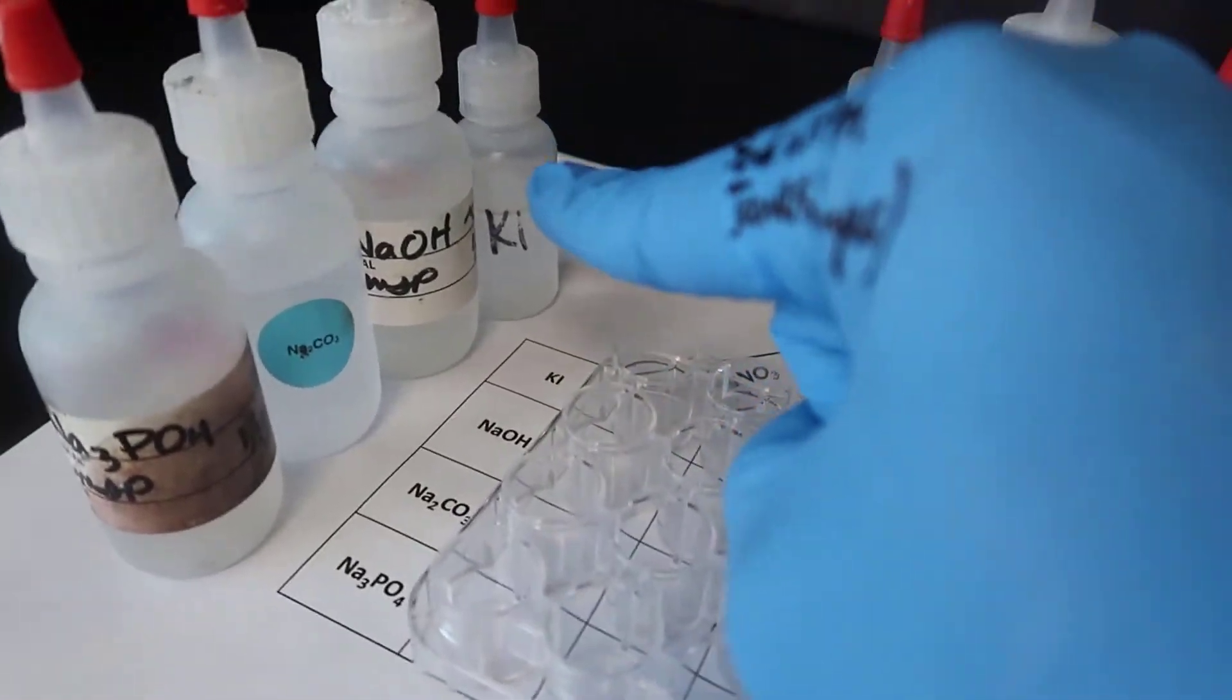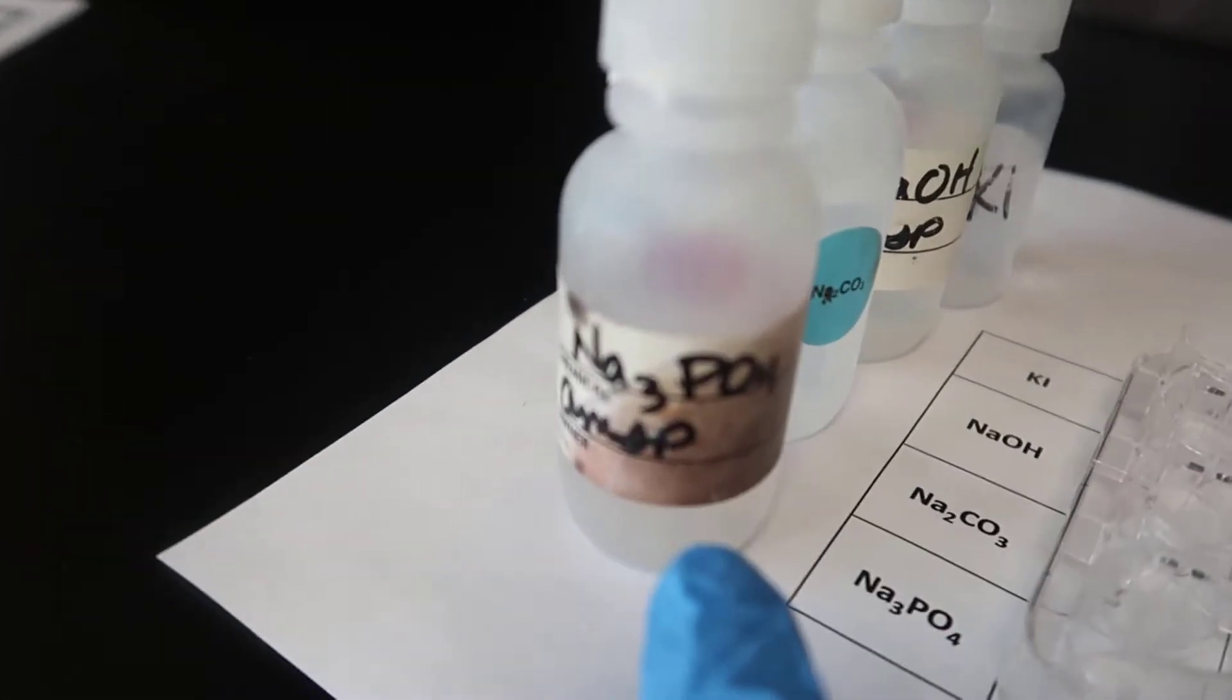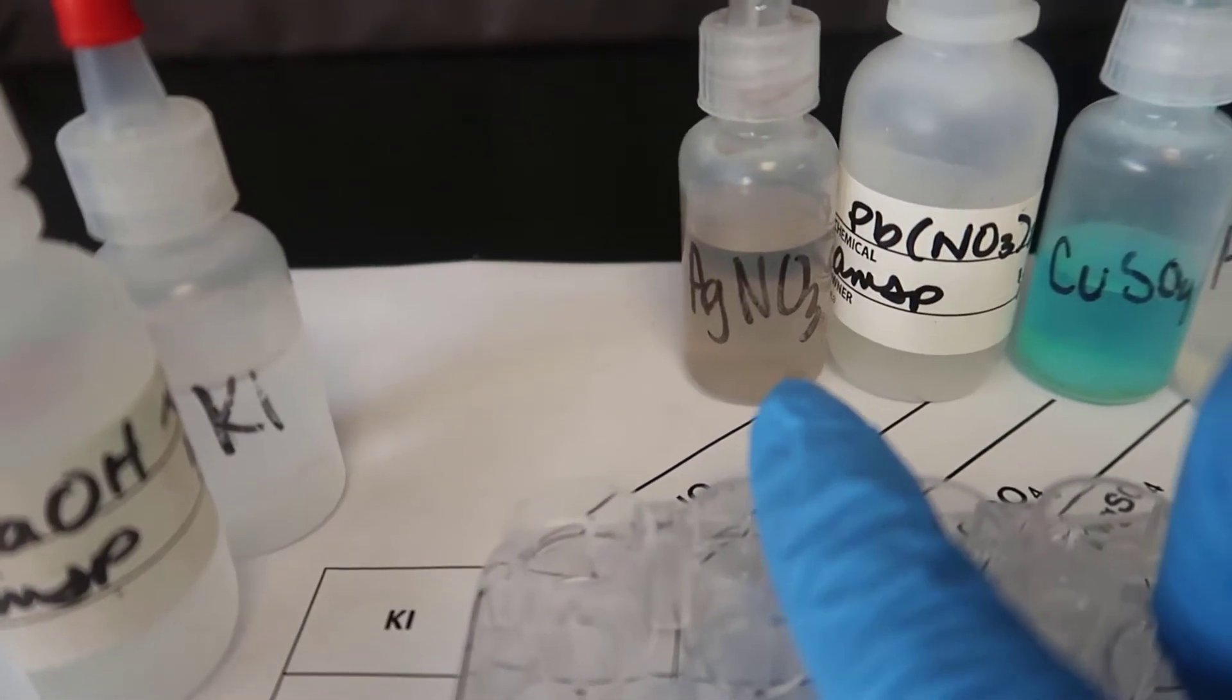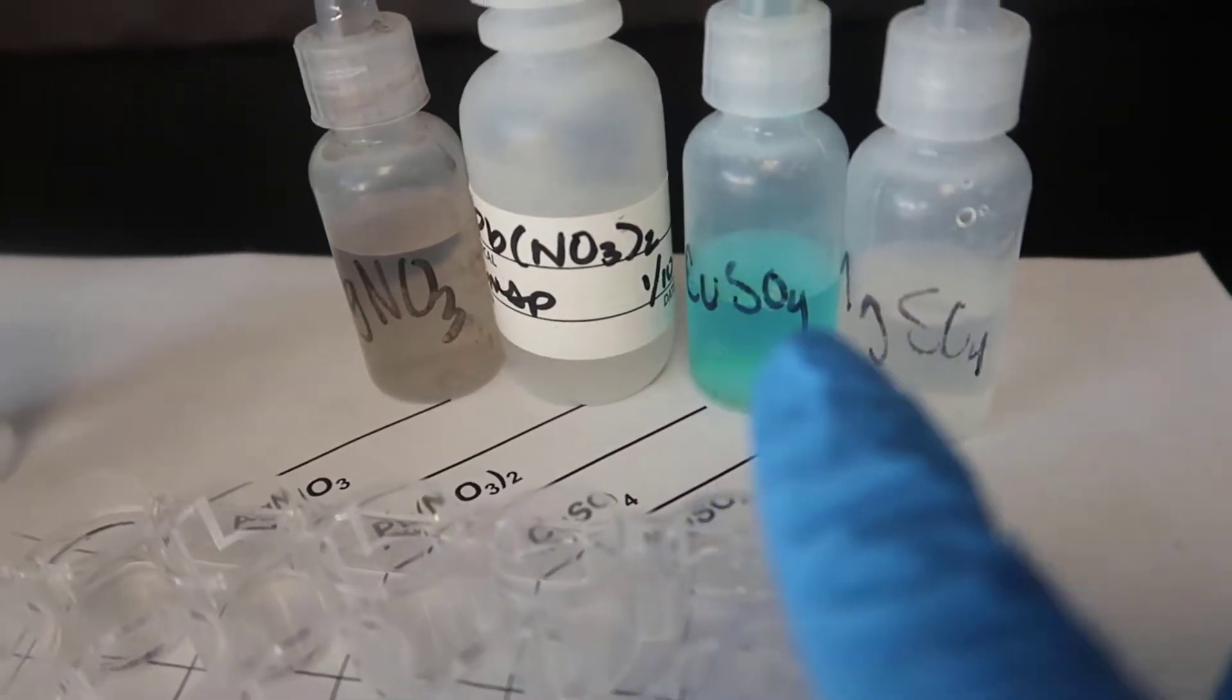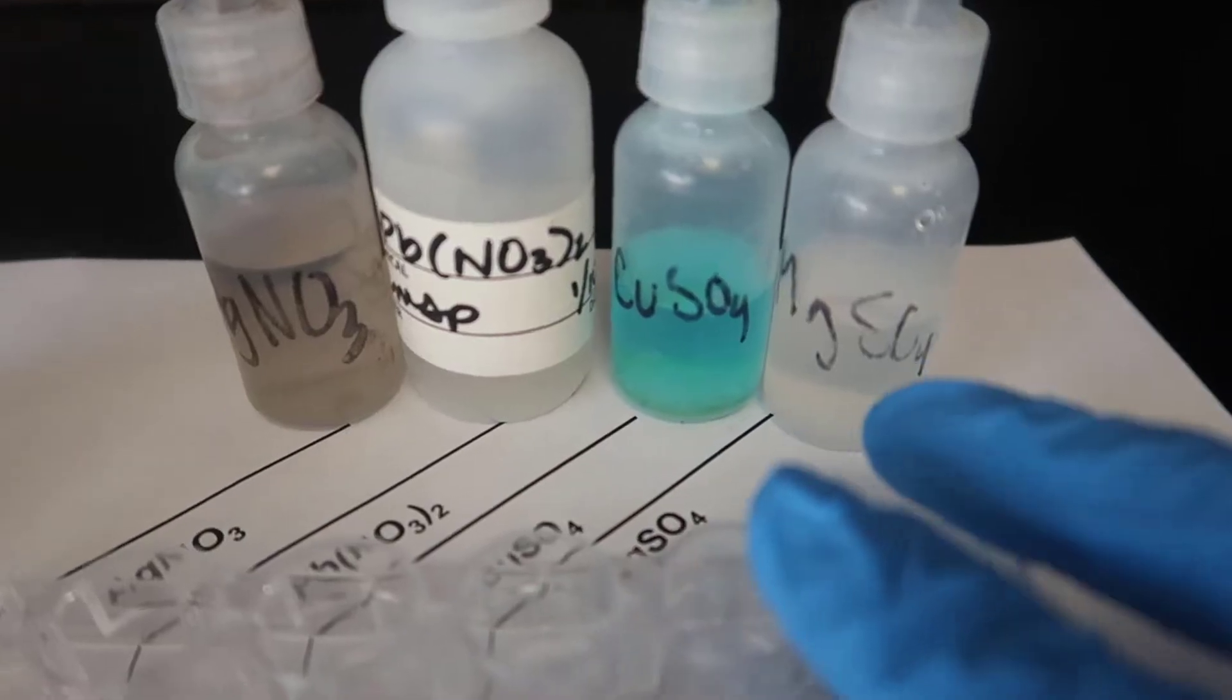So I have KI, NaOH, Na2CO3, Na3PO4, AgNO3, PbNO32, CuSO4, and MgSO4.